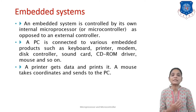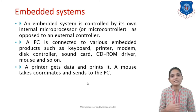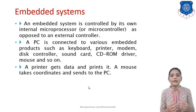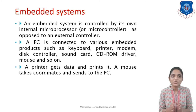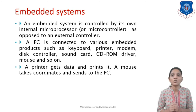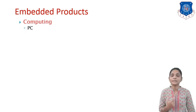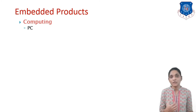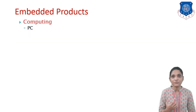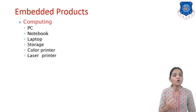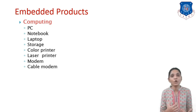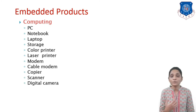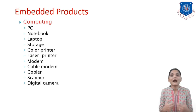When a printer receives data and prints it, or a mouse takes coordinates and sends them to the PC, these devices have some control over when to send or process data — that is what makes them embedded systems. Examples of embedded systems in the computing category include PCs, laptops, storage devices, laser and color printers, modems, scanners, and digital cameras — all digital devices requiring some control.